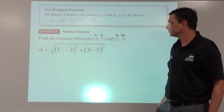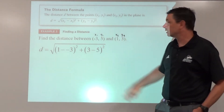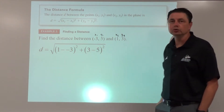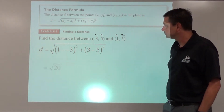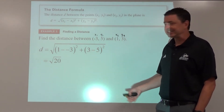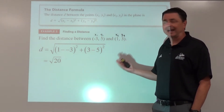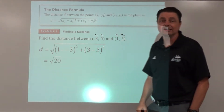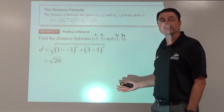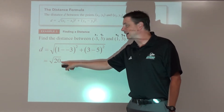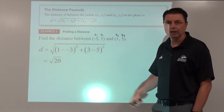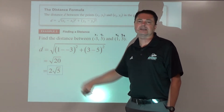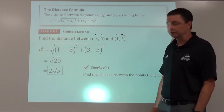Doing the calculations, we get 4 squared plus negative 2 squared. 4 squared is 16, negative 2 squared is 4. Adding those up we get 20, so the distance is the square root of 20. To simplify, we can break that up into the square root of 4 times the square root of 5, and therefore the fully simplified distance is 2 square root 5.